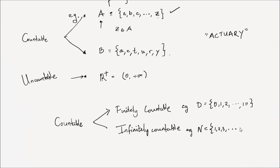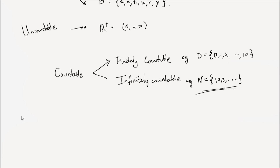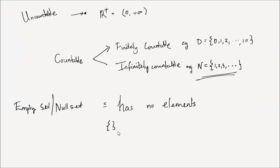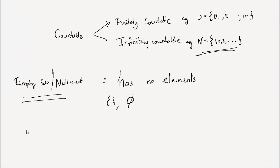A set could be countable or uncountable, and furthermore a countable set can be classified into finitely countable or infinitely countable. Finitely countable set examples include set A (the alphabet) and set B (letters in 'actuary'). Another example of a finitely countable set could be set D which contains the numbers 0, 1, 2, all the way to 10. An infinitely countable set, for example, could be the set of natural numbers: 1, 2, 3, 4, 5, 6, all the way to infinity. In fact, a set is countable if there is a one-to-one correspondence between the set of natural numbers and that set. The empty set, or null set, is a set that contains no elements. The notation for the empty set is either empty braces or the symbol ∅.